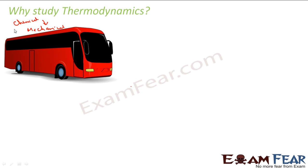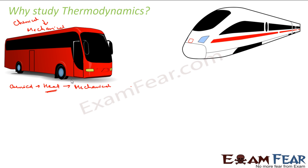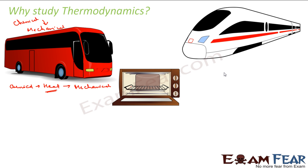But internally, if you look at the chemical energy, the petrol burns and chemical energy converts into heat energy. This chemical energy gets converted into heat energy, and this heat gets converted into mechanical energy. This is the internal working of a bus or any engine — a conversion of energy from chemical to heat to mechanical. Similarly, if a train runs on electricity, that electric energy is converted into mechanical energy. And for a burner, electric energy gets converted to heat energy.